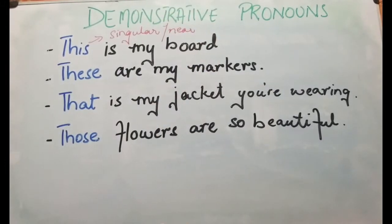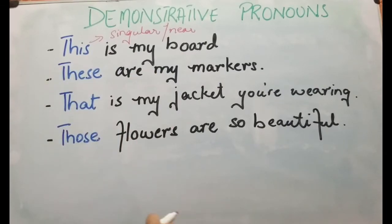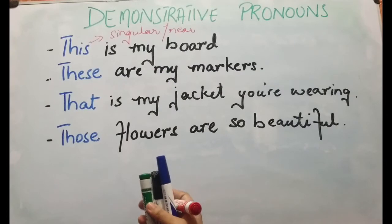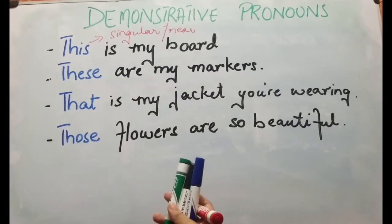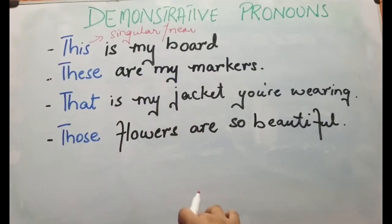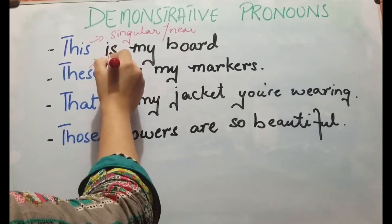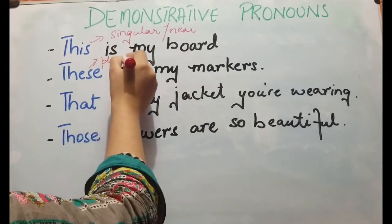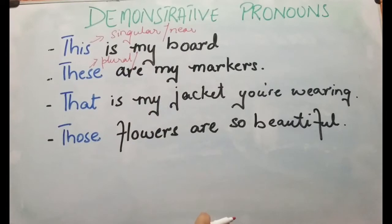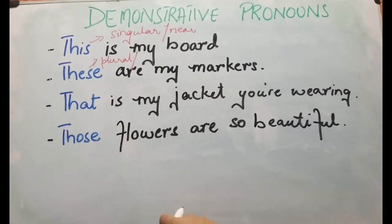Whenever you use 'this,' it means something very near to you. The next one: 'These are my markers.' I have these markers right here, and of course they are plural since there are more than one. They are also near to me, so 'these' is plural and near.